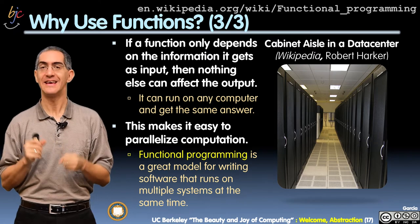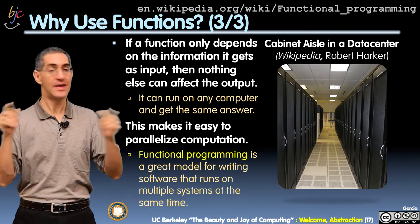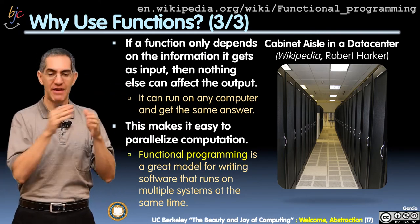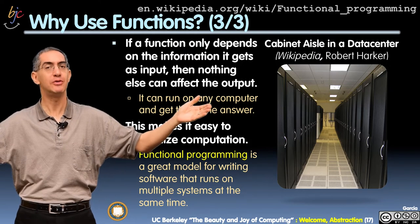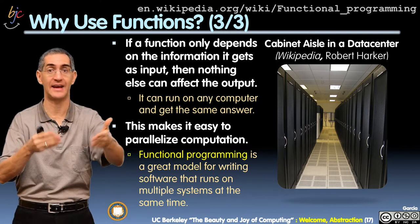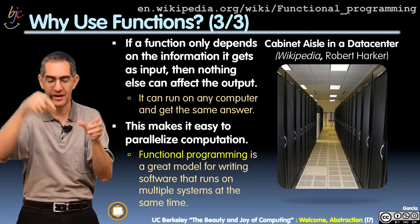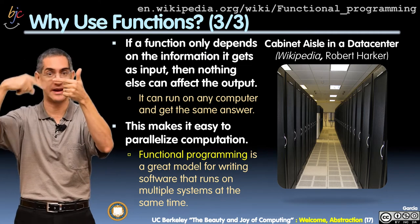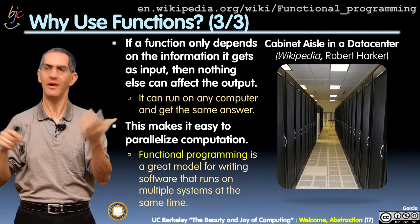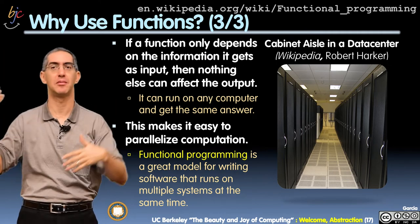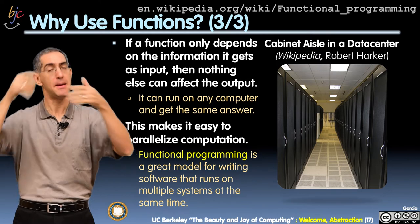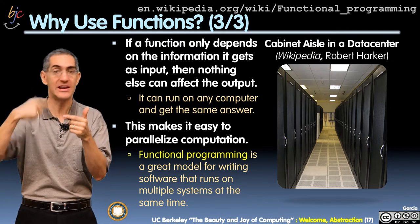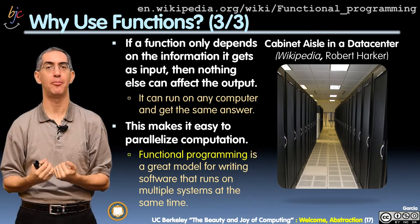Another reason to use functions: if only the inputs change and the inputs don't change the output stays the same — that's what functions do. So if you wanted to apply a function to a million data items, say calculating the income tax on a million people, each person is a list entry with all their data. Wouldn't it be amazing if you could pass that million-item list onto a million different machines, each tasked with doing just that one person? Each machine cranks away and produces an output.